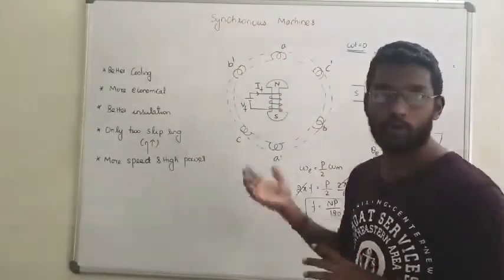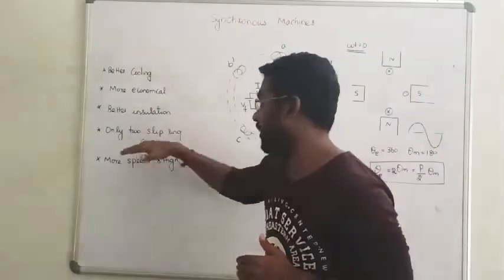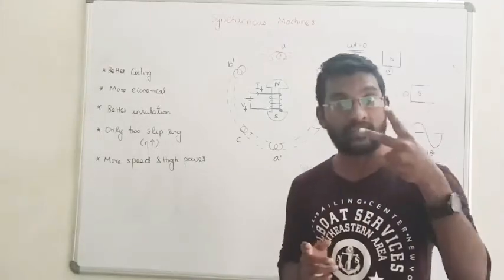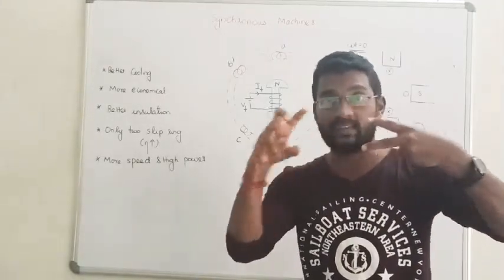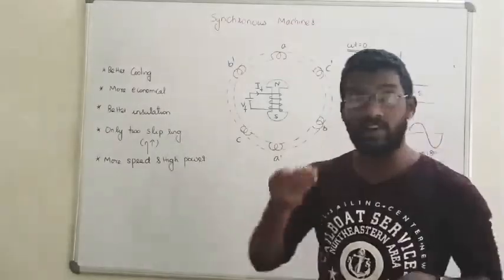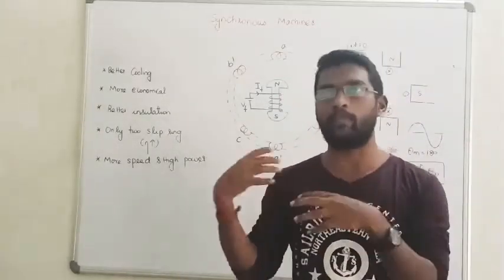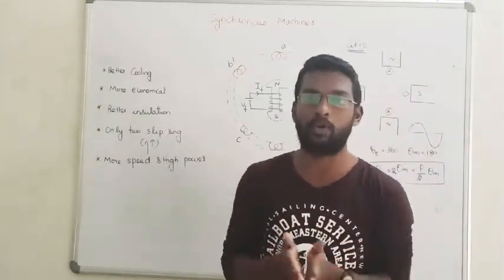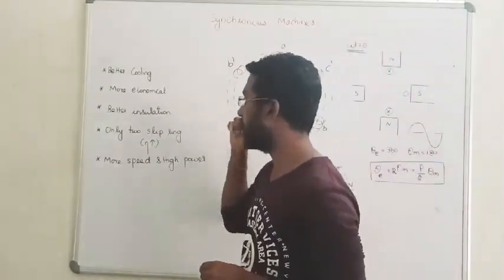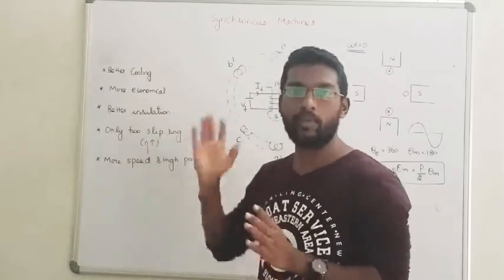When we compare the AC machine and DC machines, we have better efficiency. We have two slip rings to supply DC, compared to three slip rings. We need fewer slip rings. Here we have very less amount of losses. So losses are less. Automatically, efficiency will be improved.